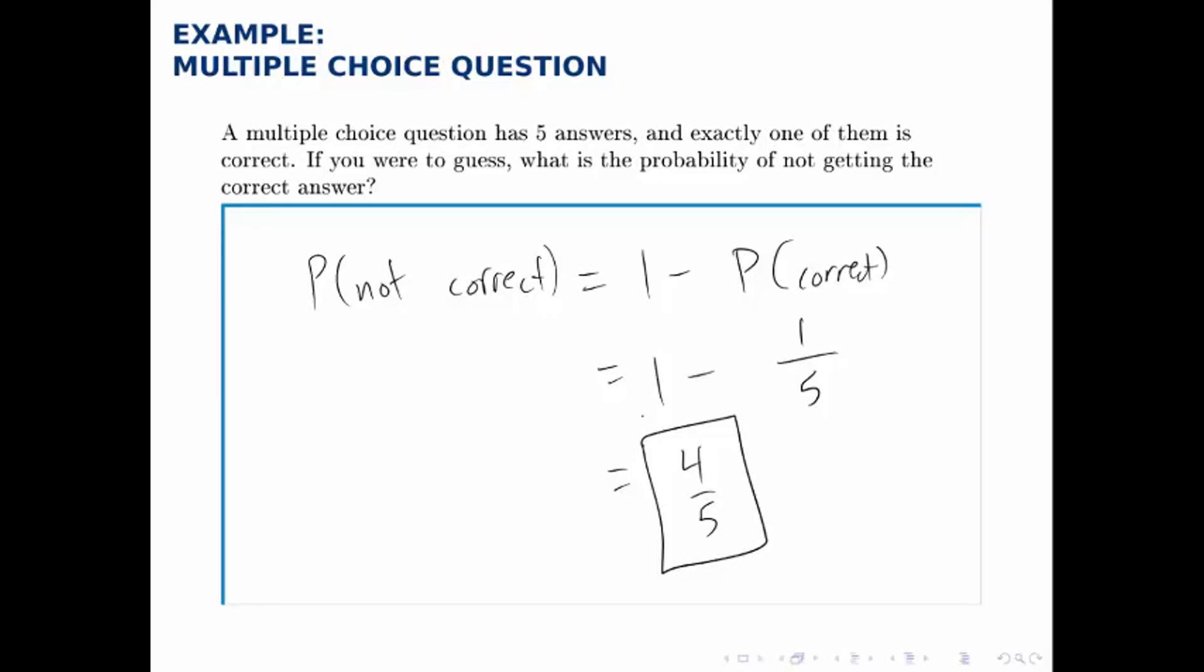Again, multiple ways to get to the right answer and any one of them is fine, but here we're illustrating the formula that lets us calculate the probability that something doesn't occur by taking 1 minus the probability that it does occur.